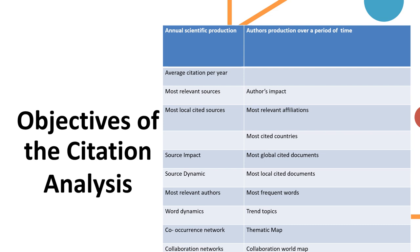These are the objectives of citation analysis. We will get results on the annual scientific production of a particular research area over a period of time, average citations per year, most relevant sources, author impact, most locally cited sources, most relevant affiliations, most cited countries, source impact, most globally cited documents, source dynamics, most locally cited documents, most relevant authors, most frequent words, word dynamics, trend topics, co-occurrence network, thematic map, collaboration networks, and collaboration world map.